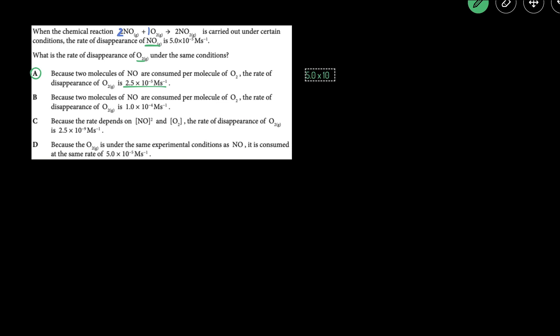5.0 times 10 to the negative 5 moles of NO per liter times seconds, because molarity is molar per liter. And then we just multiply it by the mole to mole ratio, 1 mole of O2 to 2 moles of NO, and then that way the moles of NO cancels out.